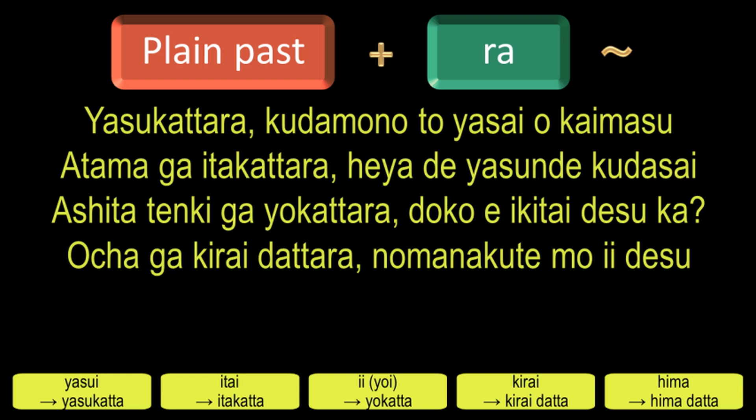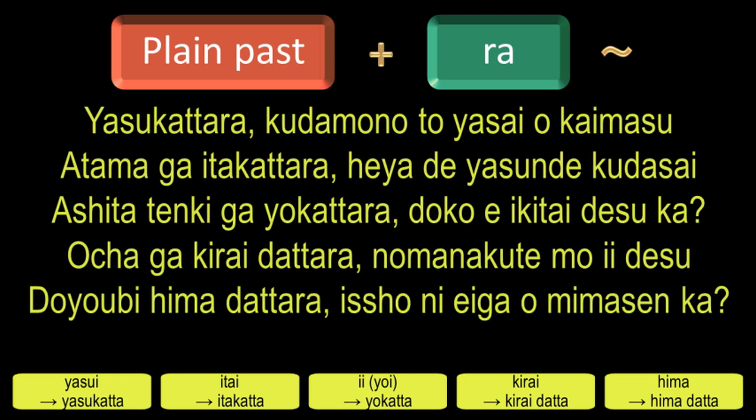And to say 'if you are free on Saturday, shall we watch a movie together,' in Japanese it will be: Doyoubi Hima Dattara Issho ni Eiga Mimasen Ka. Here, Doyoubi means Saturday, Issho ni means together, Eiga means movie, and Mimasen Ka is not a real question but an invitation to the listener to watch.